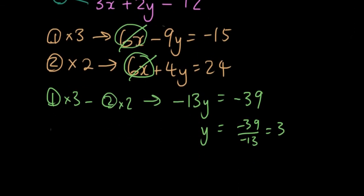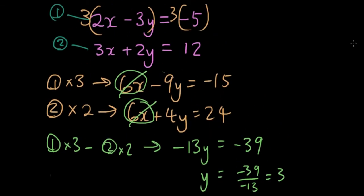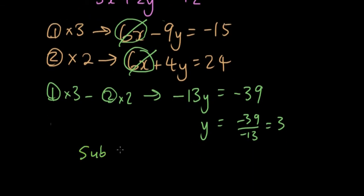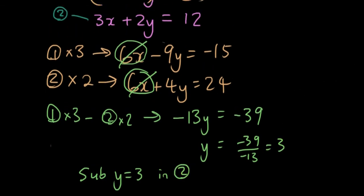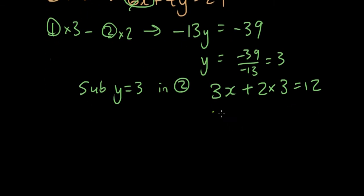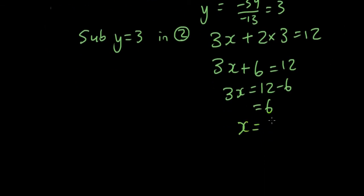And then what we did was we substitute y equals 3 into our original equation. So let's put that in equation 2, sub y equals 3 in equation 2. So that'll give me 3x plus 2 times 3 equals 12, because y is 3. So then this equals 3x plus 6 equals 12. And 3x equals 12 minus 6, which is 6. So 3x is equal to 6, and x is equal to 6 divided by 3, which is 2. So y equals 3, x equals 2, and that is our final answer.